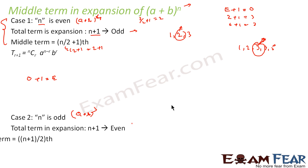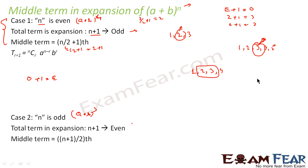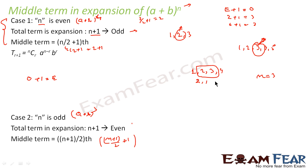When the total number of terms is even, there are two middle terms. For example, with n = 3, you get 4 terms, and there are two middle terms: the (n+1)/2 th term, which is 4/2 = 2nd, and the (n+1)/2 + 1 th term, i.e., the 3rd. So both these terms are middle terms.